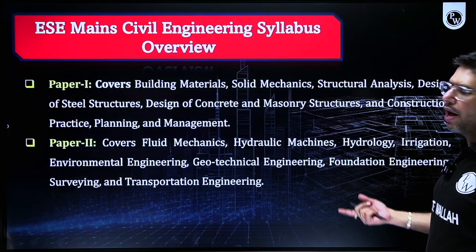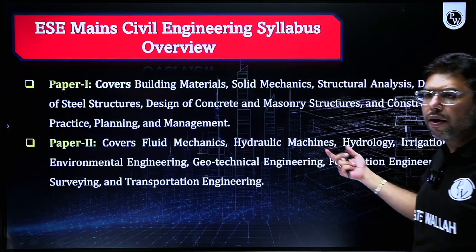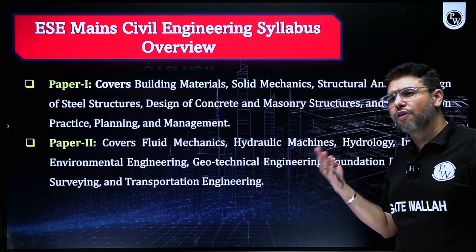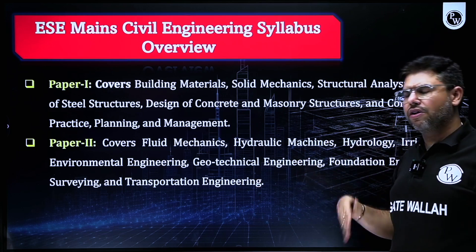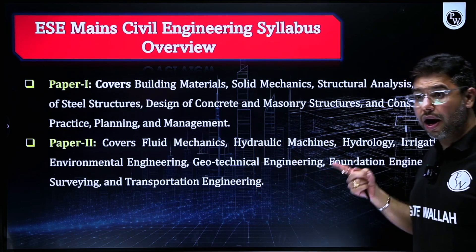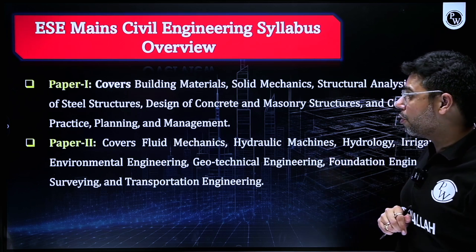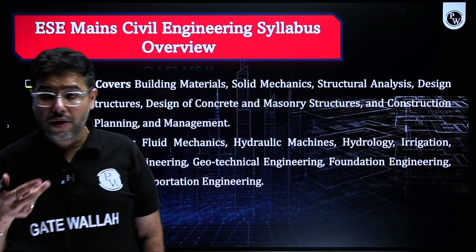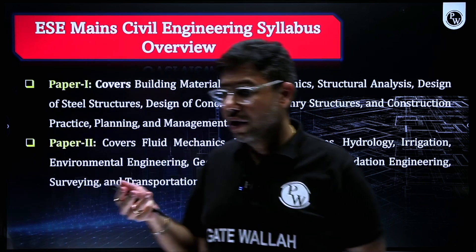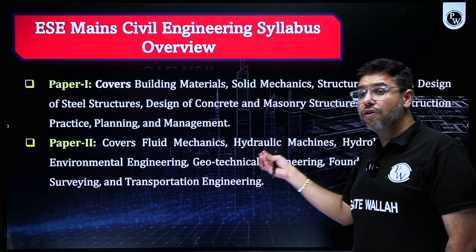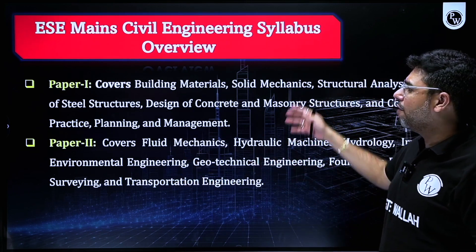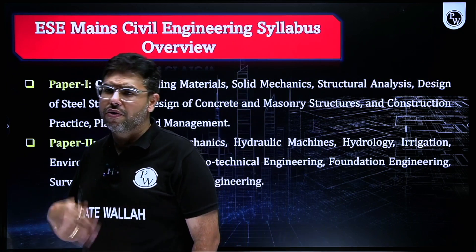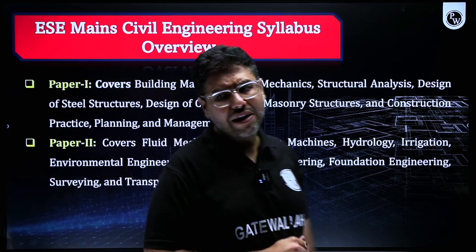There would be two papers: Paper 1 and Paper 2. Paper 1 generally comprises strength of materials, structural analysis, design of steel structure, design of concrete structure, CPM and construction management, and building materials. Paper 2 generally comprises fluid mechanics, environmental engineering, geotechnical engineering, hydraulics, irrigation/water resource engineering, and transportation engineering. Your exam would be taken in two stages — Paper 1 and Paper 2 — both carrying 300 marks each.